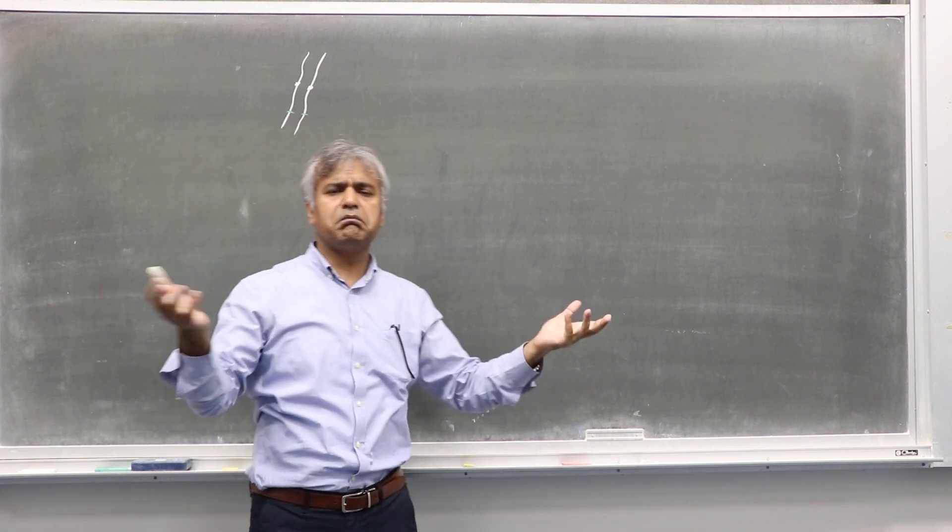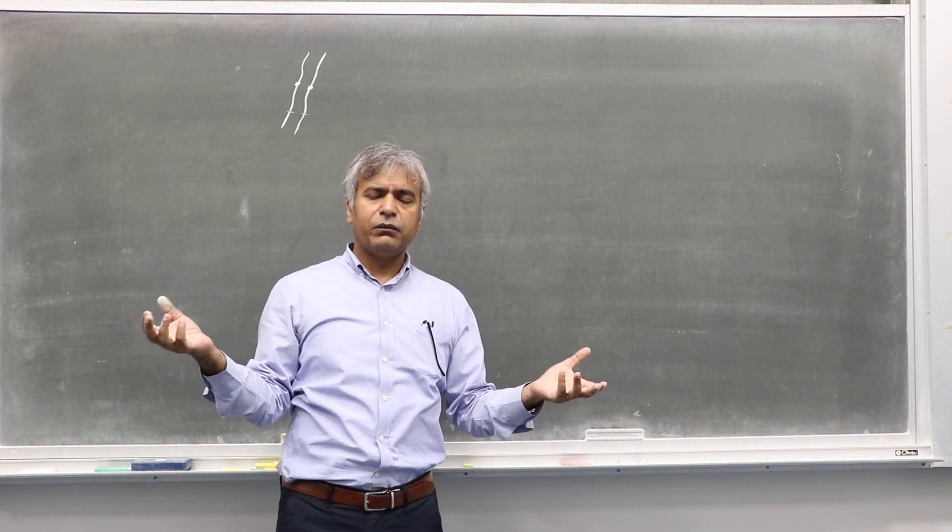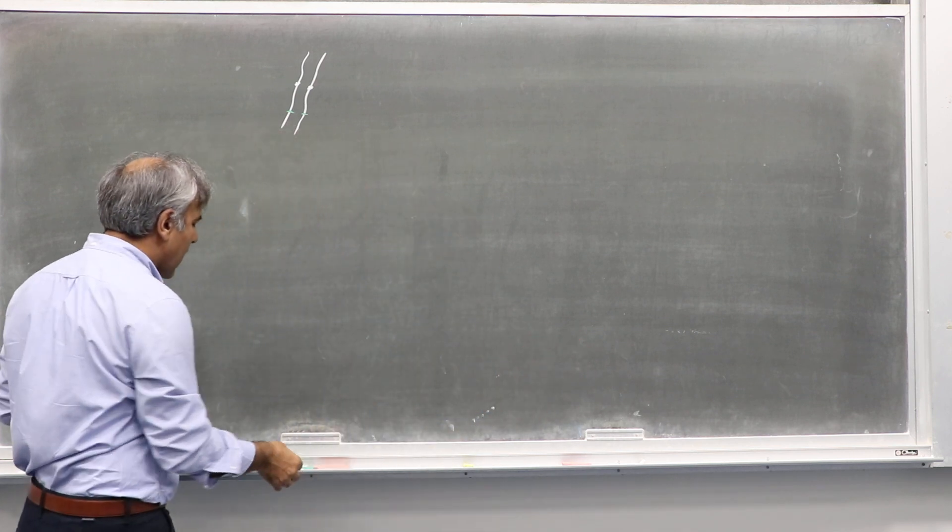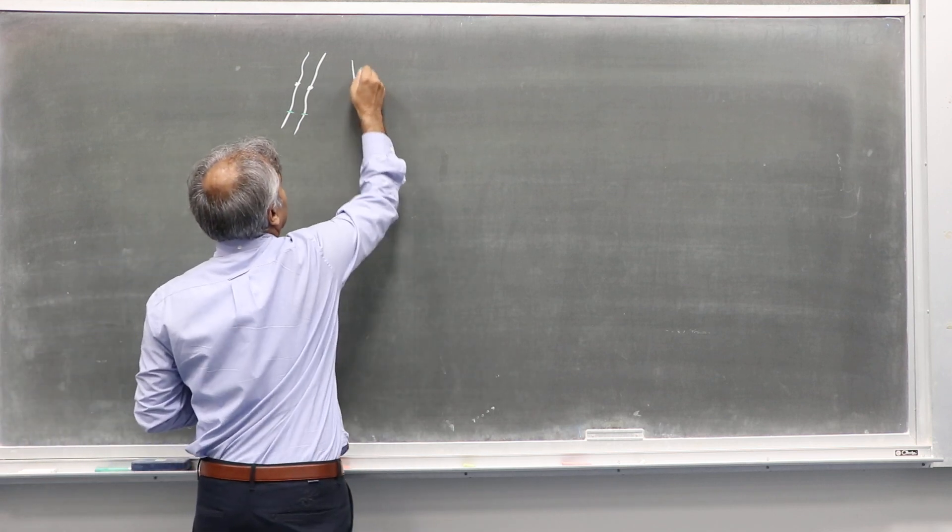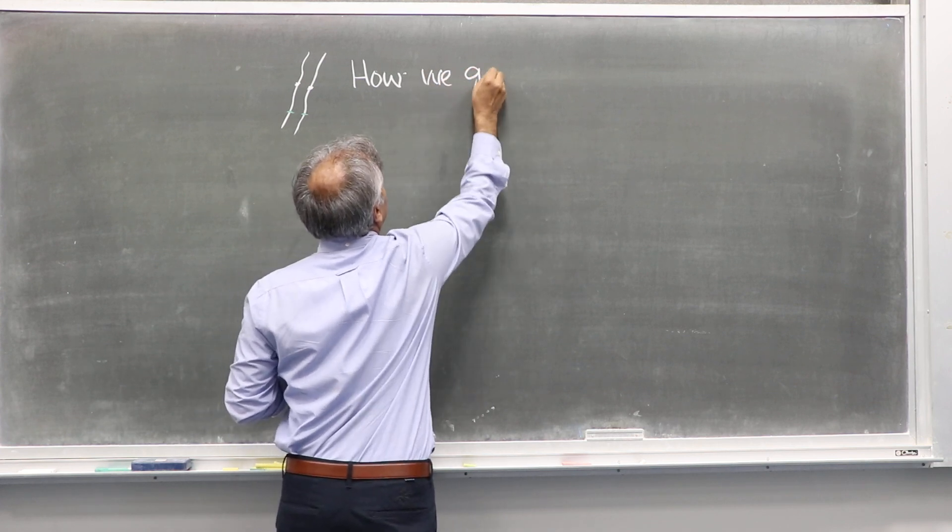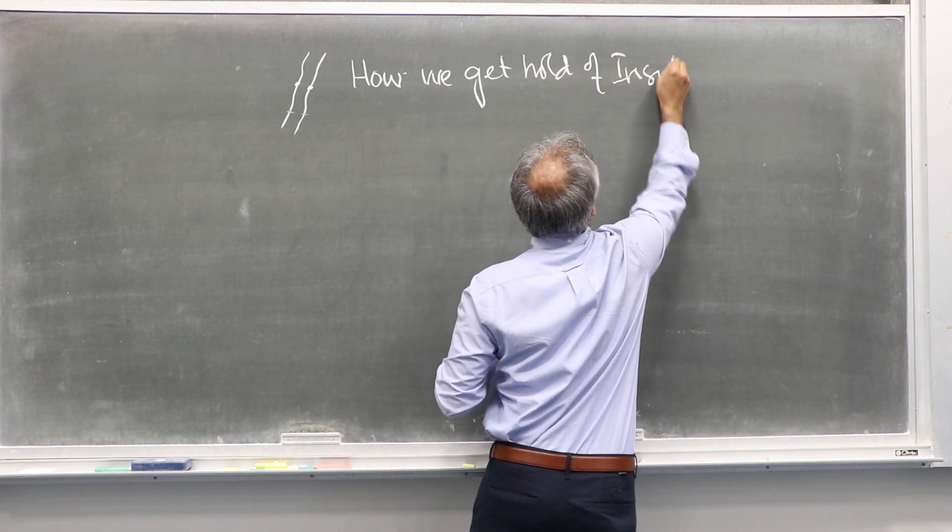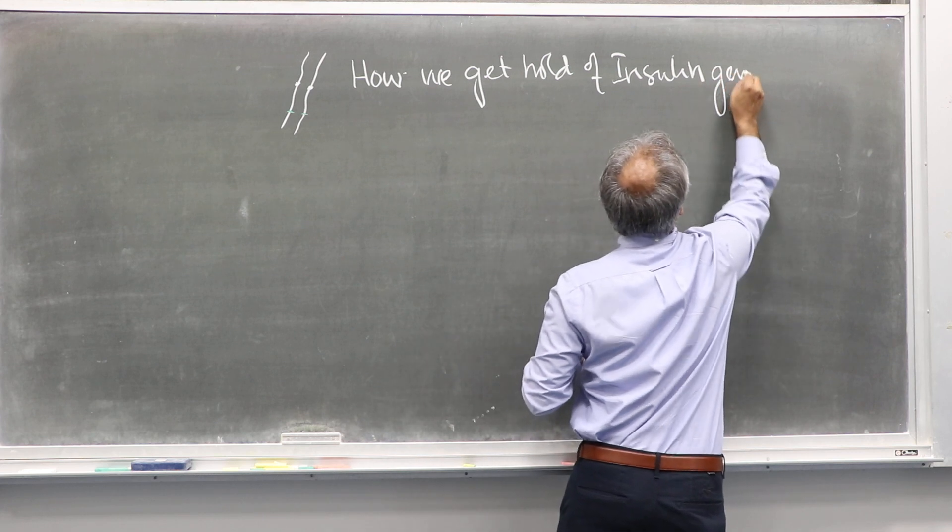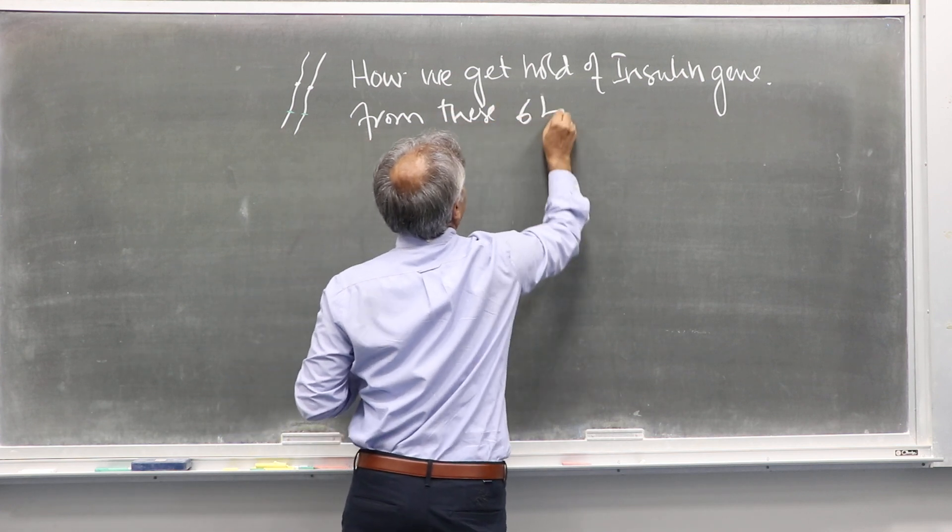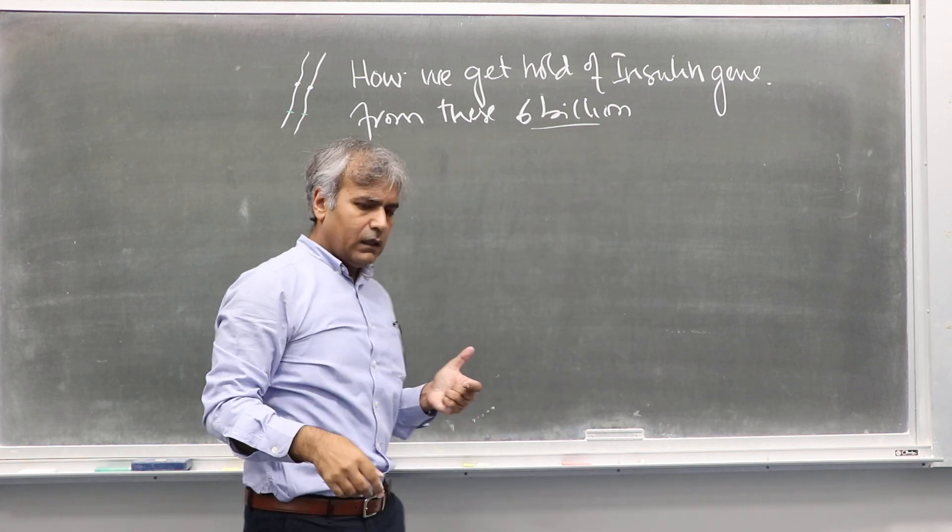Imagine insulin will be a few kilobases, a few hundred or a few thousand nucleotides long. Now the question is: how do we get hold of the insulin gene from these six billion base pairs in the genome?